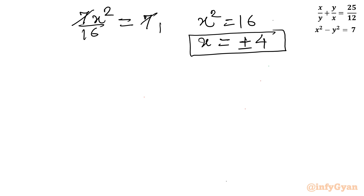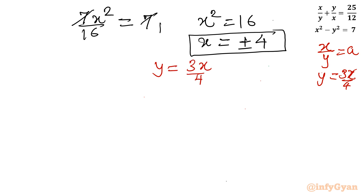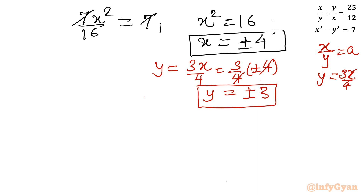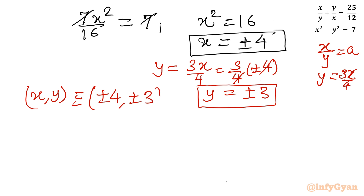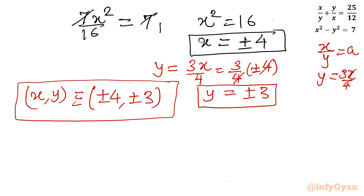Taking the square root of both sides: x equals plus or minus 4. Recalling our substitution y equals 3x over 4, we put in x equals plus or minus 4: y equals 3 over 4 times plus or minus 4, so y equals plus or minus 3. Therefore our first solution set is x comma y equals plus or minus 4 comma plus or minus 3, meaning (4, 3) and (−4, −3).